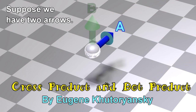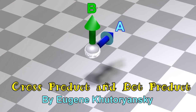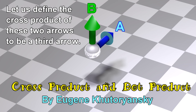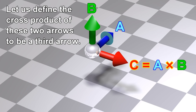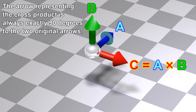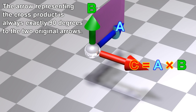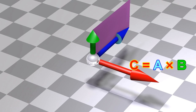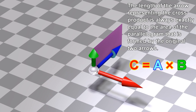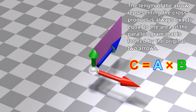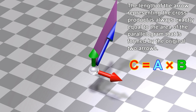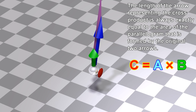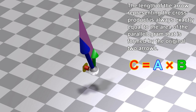Suppose we have two arrows. Let's define the cross product of these two arrows to be a third arrow. The arrow representing the cross product is always exactly 90 degrees to the two original arrows. The length of the arrow representing the cross product is always exactly equal to the area of the parallelogram that is formed by the original two arrows.